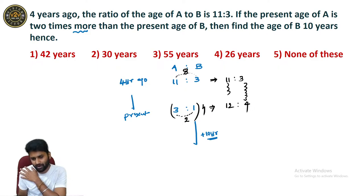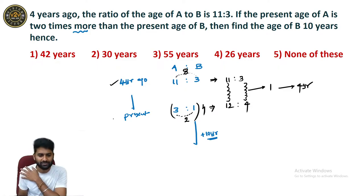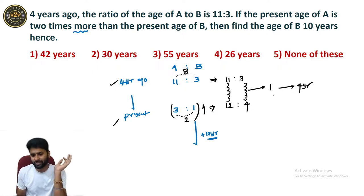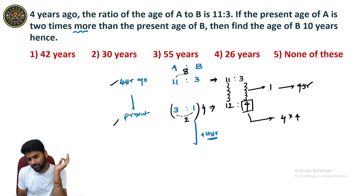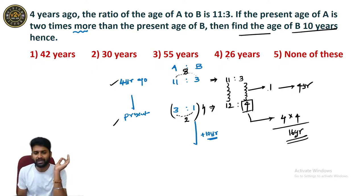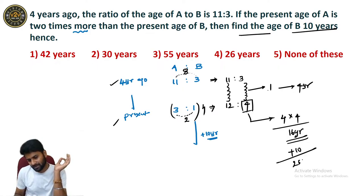From 3 to 4 or 11 to 12 is 1 unit. 1 unit is exactly equal to 4 years, because we have a comparison of 4 years equaling a difference of 1 unit. We need to identify the present age of B. Present age of B is 4 units: 4 × 4 = 16. The question asks for the age of B 10 years hence. After 10 years, age of B is 5 units, which gives the answer.